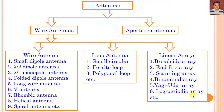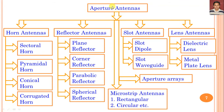We can categorize wire antennas in these categories. Further, we categorize the aperture antenna by this block diagram. The aperture antenna can be categorized into horn antenna, reflector antenna, slot antenna, lens antenna, microstrip antenna, and aperture antenna arrays. Horn antenna subcategories include sectoral, pyramidal horn, conical and corrugated, or other combinations. Reflector antennas include plane reflector, corner reflector, parabolic and spherical reflector antennas. In microstrip antennas: rectangular, circular, elliptical, and other geometries. Slot antennas include slot dipole, slot waveguide, and slot spiral antenna.